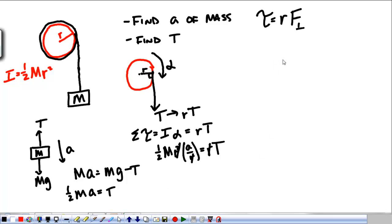So all of those R's go away, and I've got one-half MA is equal to tension. Well, when I add those up, tensions all cross out, and I have three-halves MA is equal to MG. My M's go away at this point, and my acceleration is equal to two-thirds gravity.